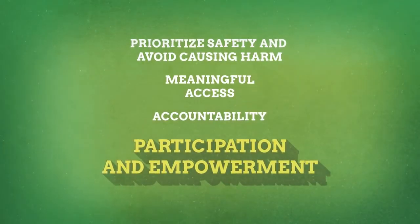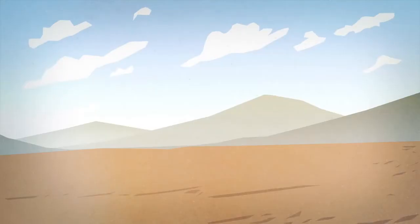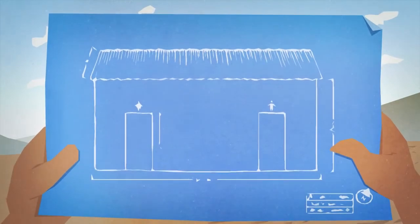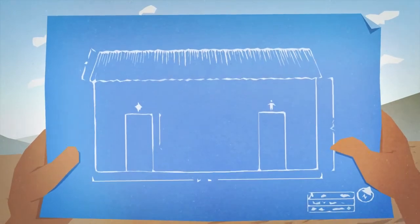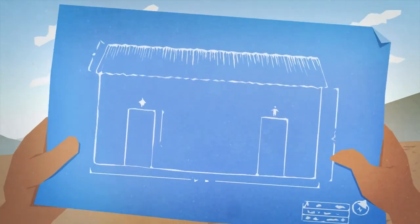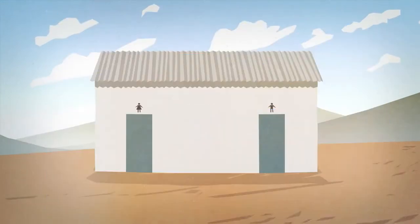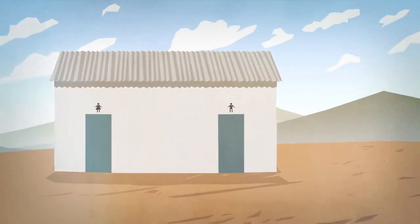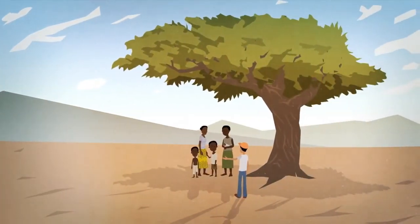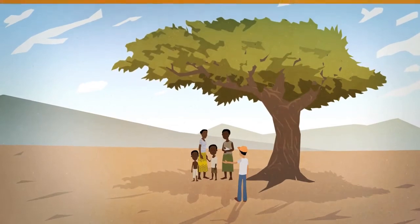Participation and empowerment: this is about ensuring that beneficiaries are actively involved or even take full control of the humanitarian intervention. As well as receiving information, people in humanitarian crisis have the right to participate in the decisions that affect them.